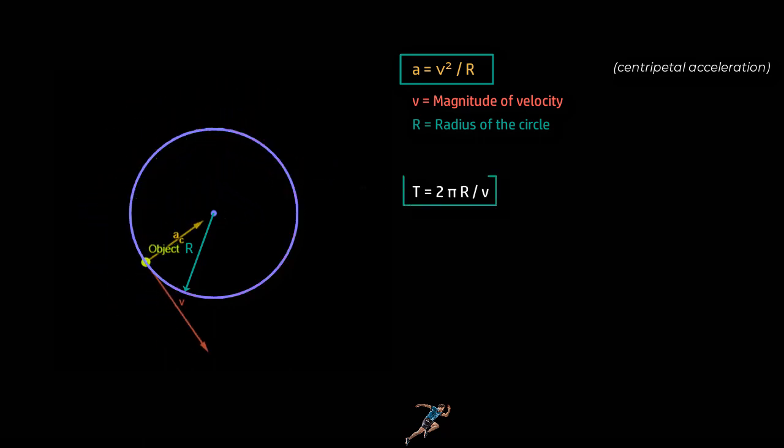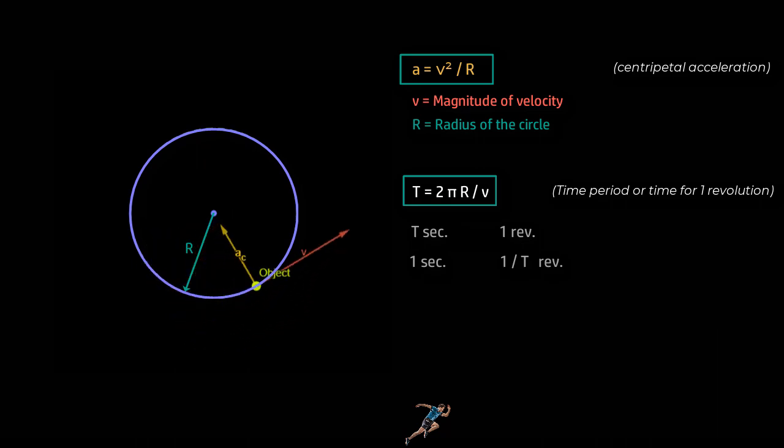And this is what we call the time period of uniform circular motion or simply said the time taken to do one single revolution. Well, if it takes t seconds to do one revolution, straightforward mathematics tells us that in one second, it will do one upon t revolutions. And that is what you call the frequency of revolution.